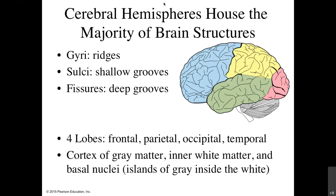The cerebral hemispheres have a cortex of gray matter on the outside — all the cell bodies, unmyelinated fibers, dendrites. On the inside, deeper in the cerebral hemisphere, you'll see white matter — all those myelinated axons, myelinated with a fatty substance, which is why it's white. And you'll see a few little bits of gray inside the white matter called our basal nuclei.